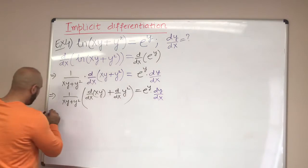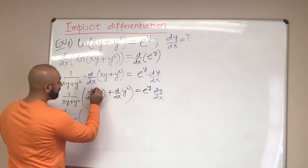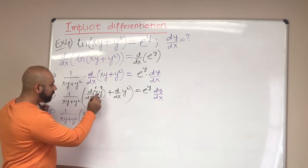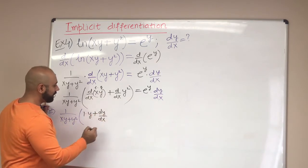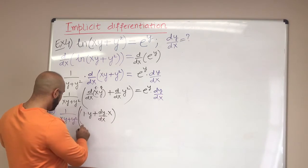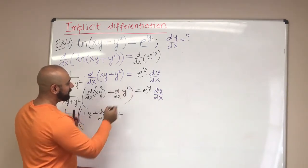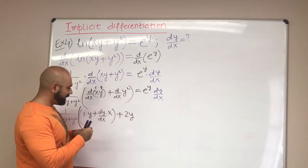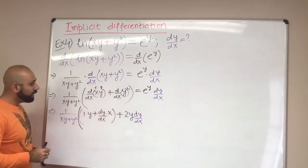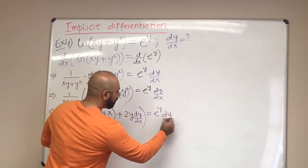Rewriting 1/(xy + y²): for d/dx of xy using the product rule, derivative of x is 1 times y, plus dy/dx times x. For d/dx of y², using the power rule it's 2y, but we must multiply by dy/dx since y is a function of x. Closing the parentheses, the right-hand side is e^y · dy/dx.